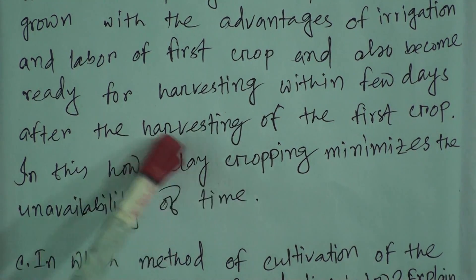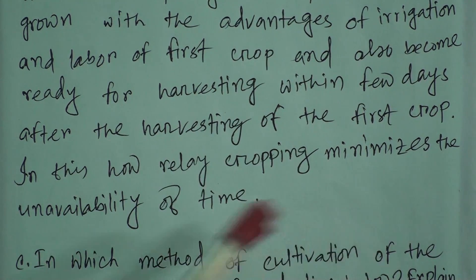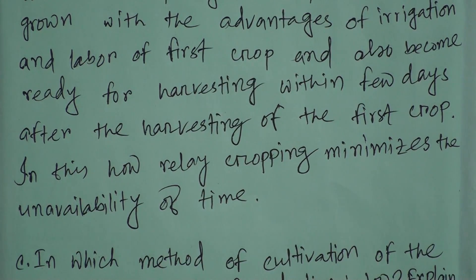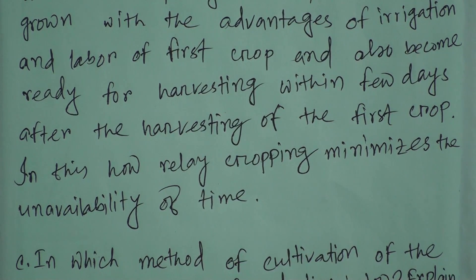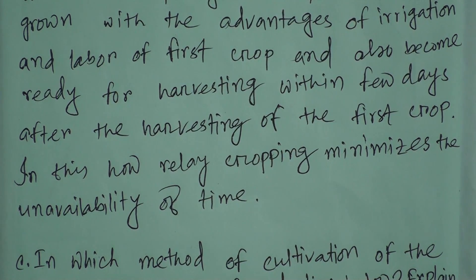In this way, relay cropping minimizes the unavailability of time. It also reduces the cost of the farmer because the second crop can be sown alongside the first crop.